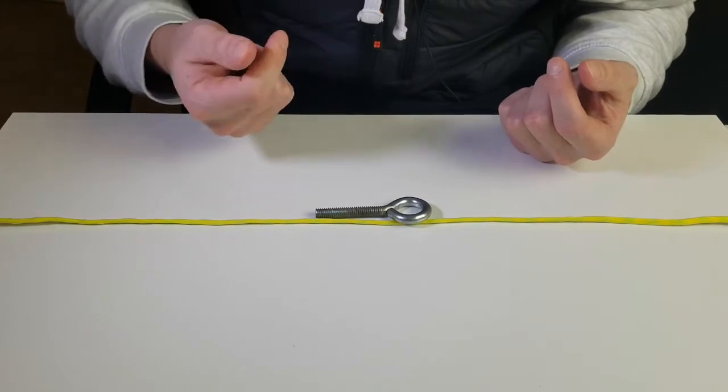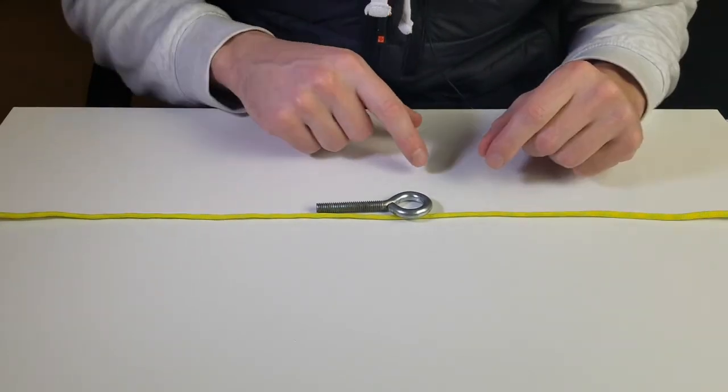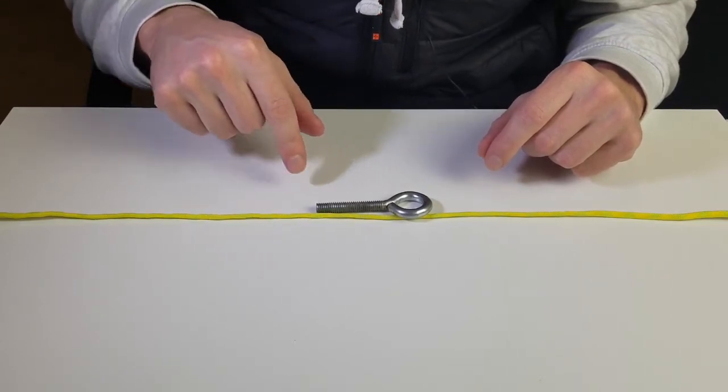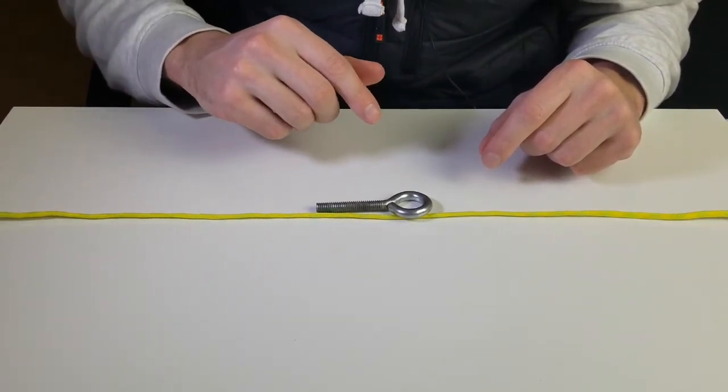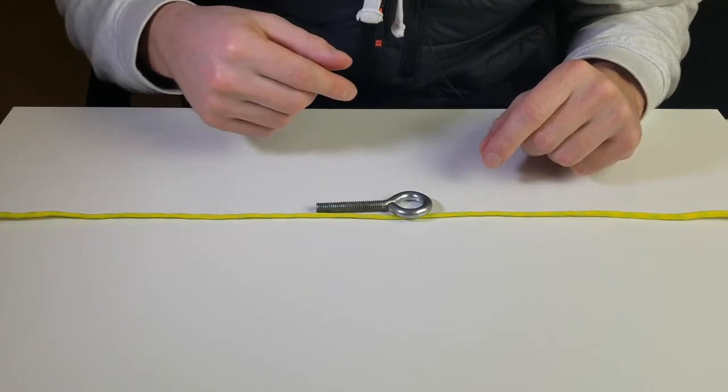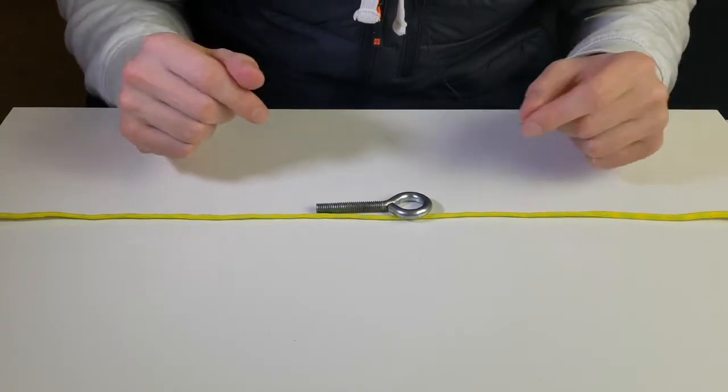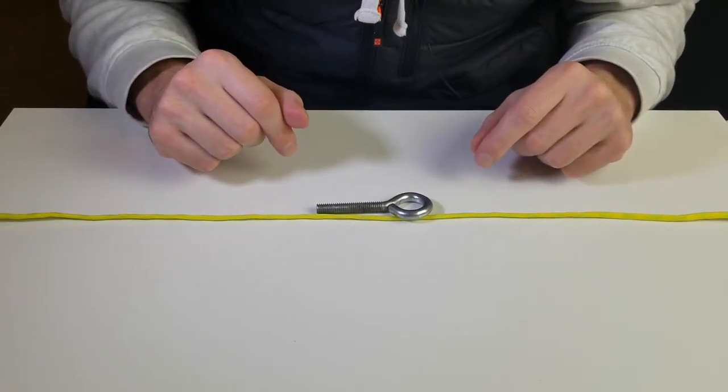I am first going to start with the clinch knot and then I'll do the improved version after. I would recommend that you probably just go with the improved version - it's going to be stronger, there's just one extra step, and it's really simple. But you can pretty much use whatever one you want; they're both going to be fairly good.